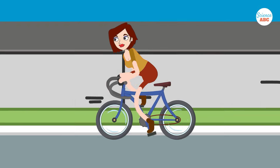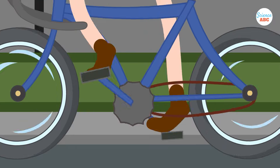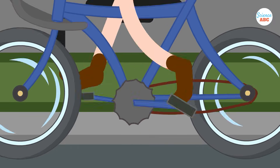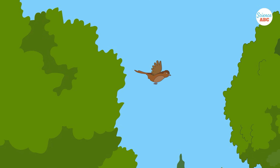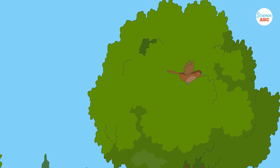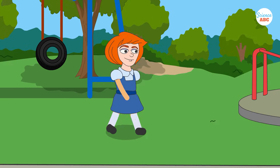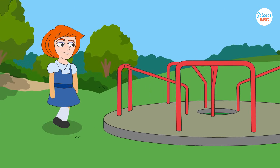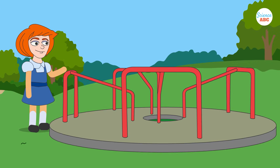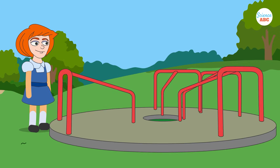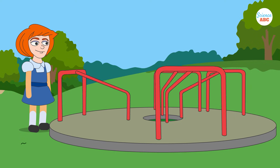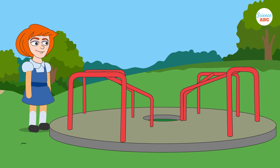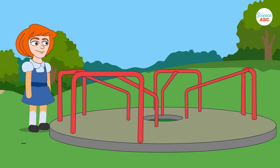Torque is an interaction that affects the rotational motion of an object. To illustrate this with a real-world example, picture yourself at a playground about to exert force on a merry-go-round. As you push it, the speed of its rotation increases.